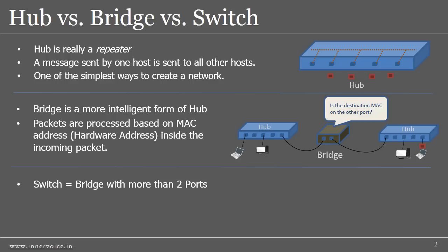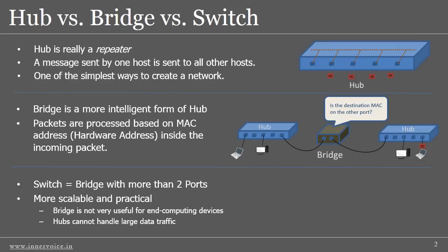So what is a switch? A switch is a bridge with more than two ports. It operates on the same principle as that of a bridge. A switch overcomes the limitations of a hub as well as a bridge. Since the switch filters packets based on MAC address, it can manage traffic better than a hub, and since a switch has many more ports than a bridge, it can be practically connected to many end-user devices or hosts.